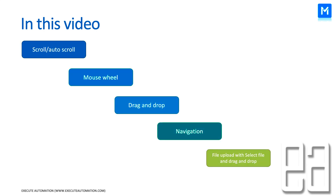In this video we are going to talk about scrolling and auto scrolling, mouse wheel, drag and drop, navigation, and file upload with select file and drag and drop operation. These are some of the most advanced interactions — not just clicking an element, selecting a dropdown, clicking a checkbox, or selecting hyperlinks. We have already discussed those in our previous video.